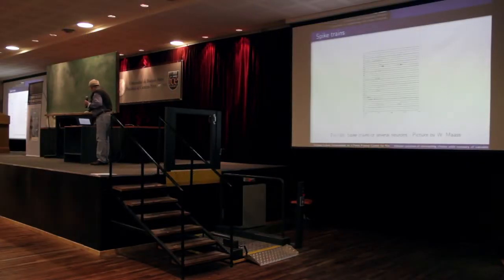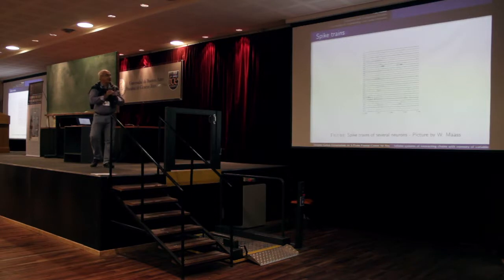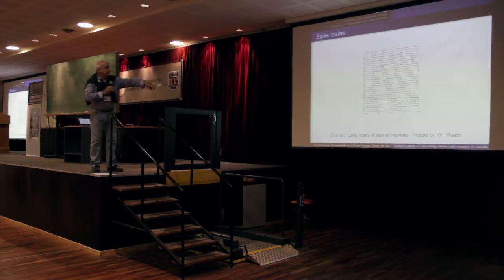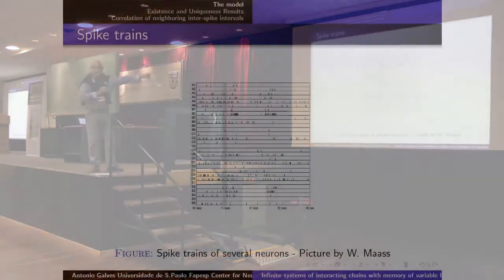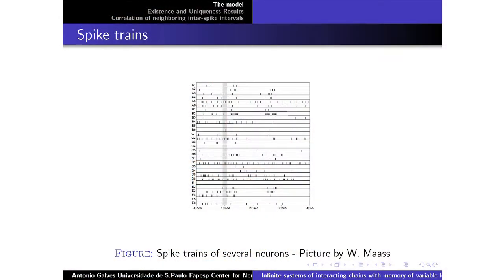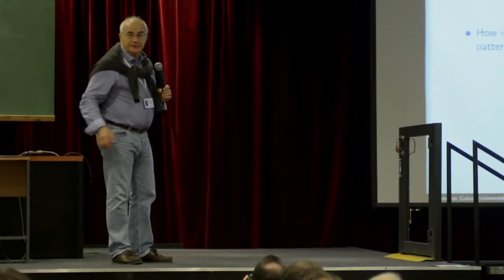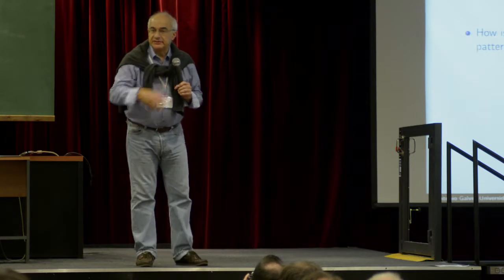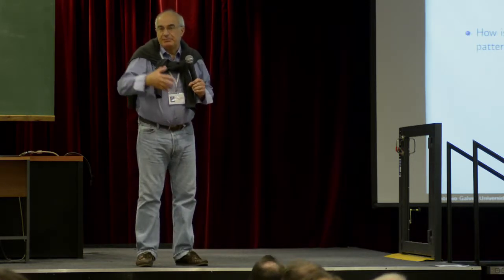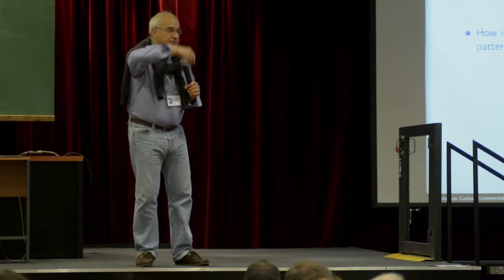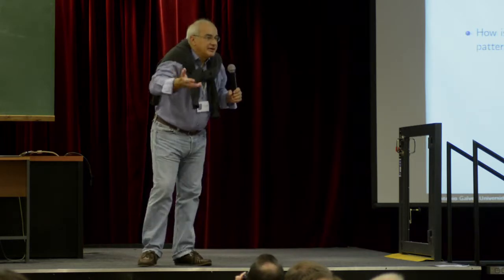Let me show you. This is a raster plot. You have several neurons, and you have horizontal axis time. I'm indicating the times in which every neuron has a spike. Now, the basic question: how is information, external stimuli, encoded in this way? We believe that the spike trains encode all our perceptions, external world, feelings, thoughts.